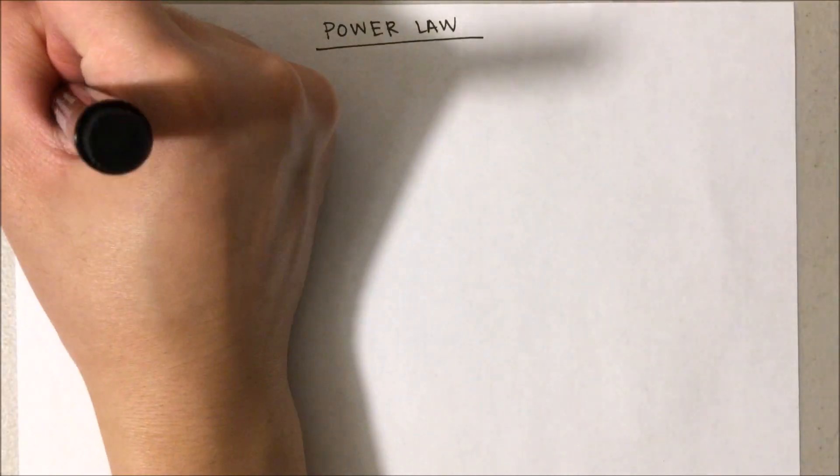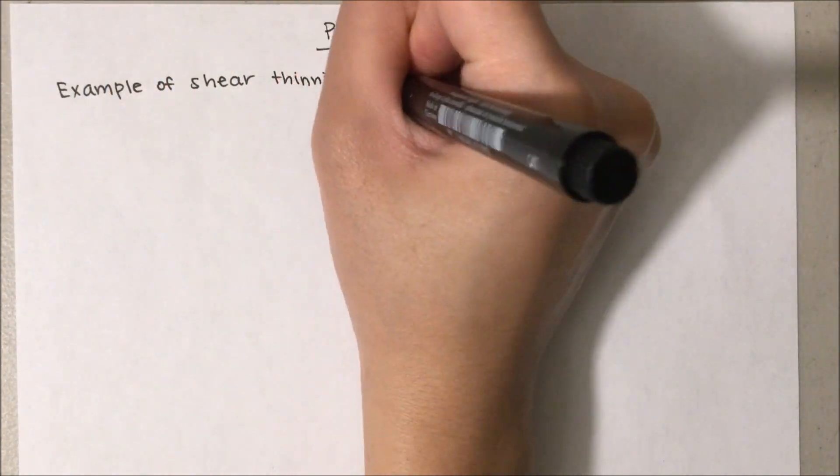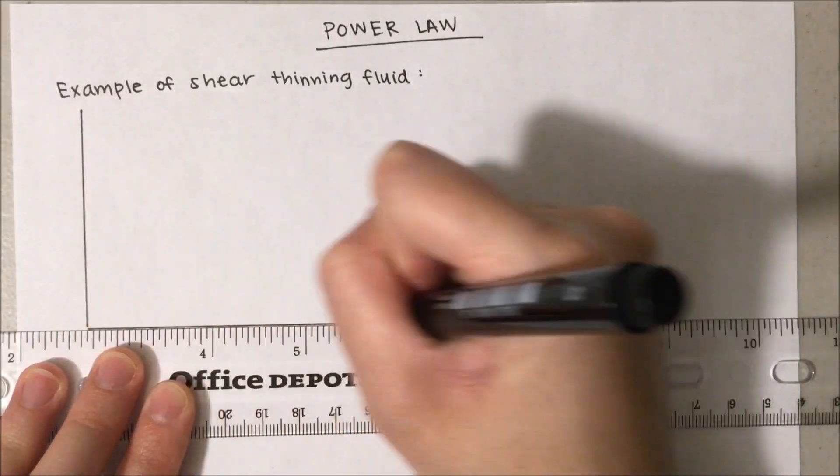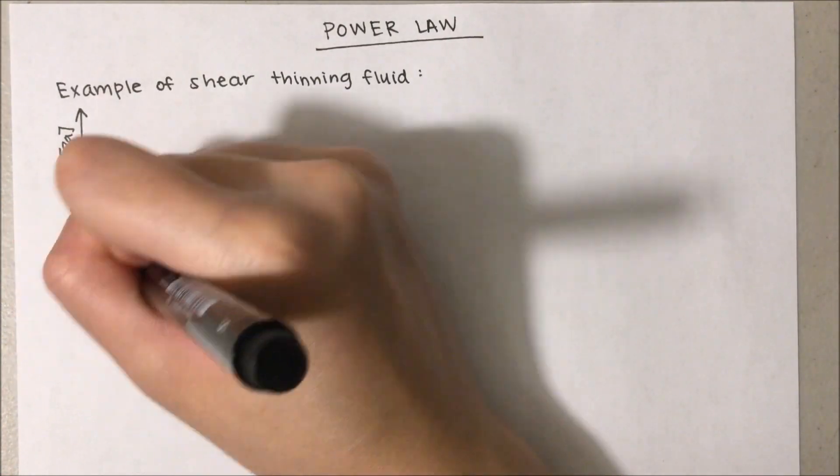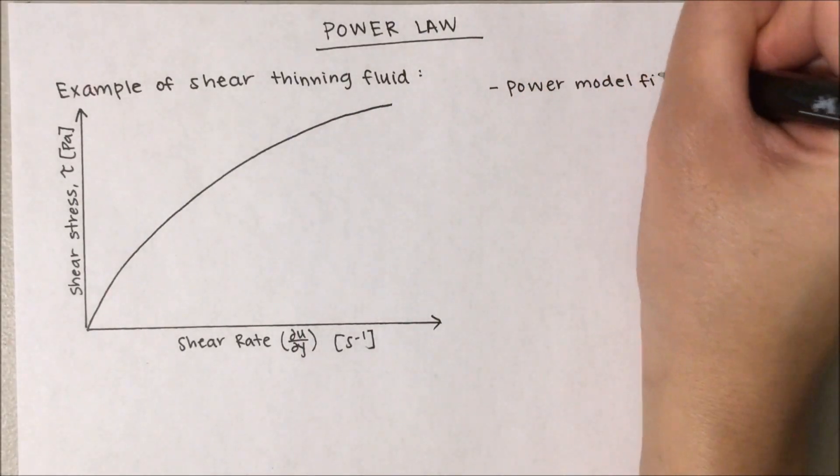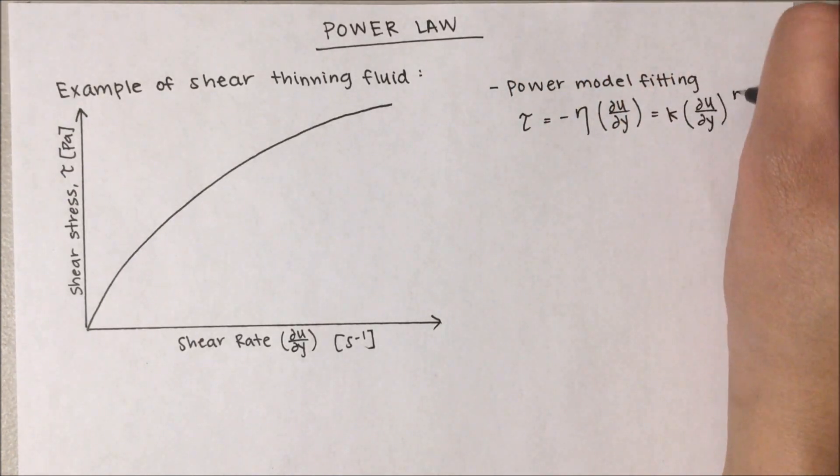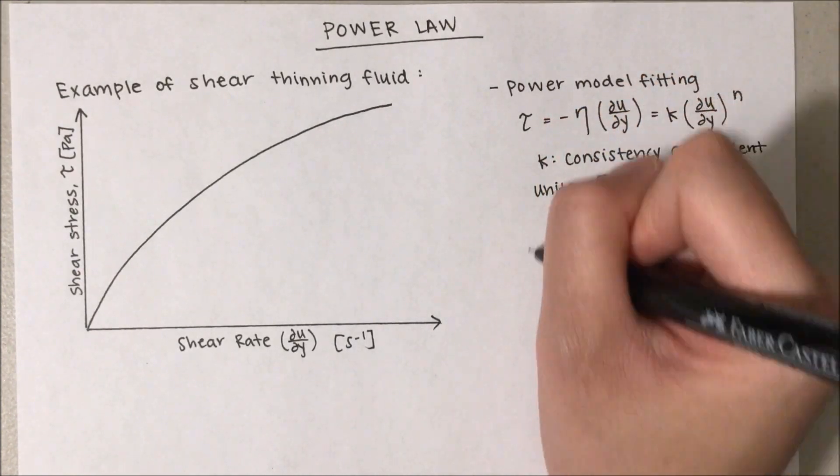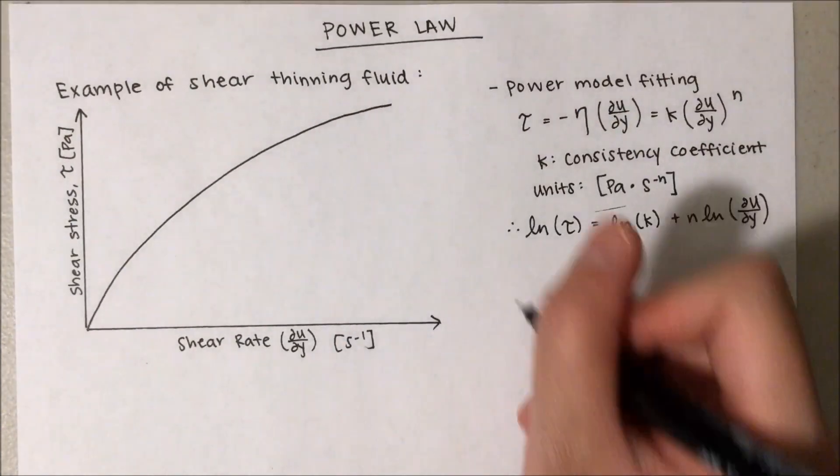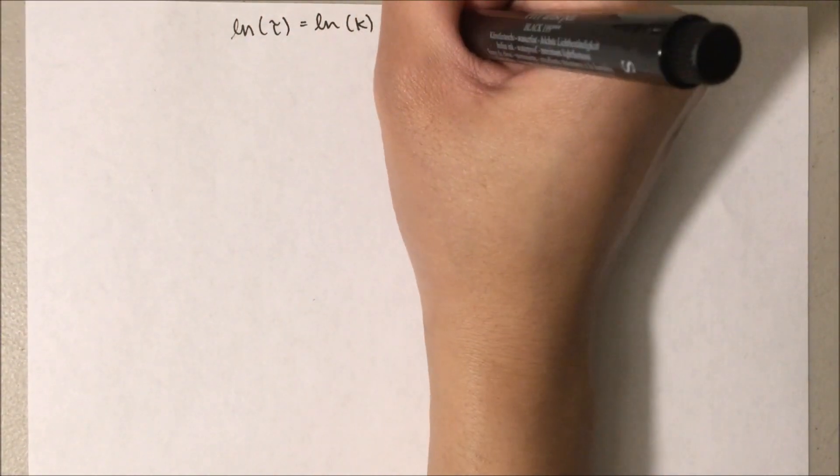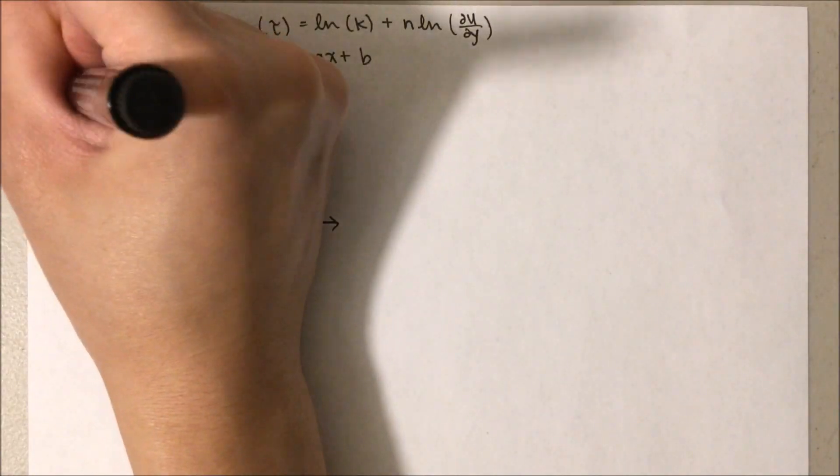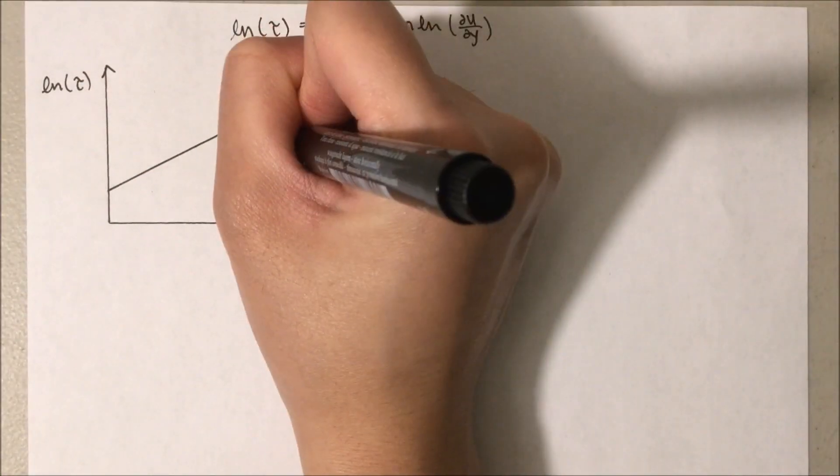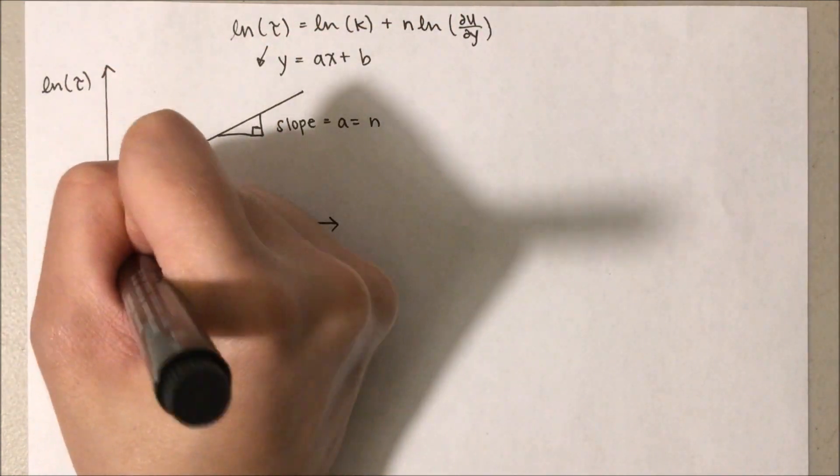We could calculate the non-Newtonian fluid's shear stress and apparent viscosity by utilizing the power law. Here is an example curve for a shear thinning fluid. As you might notice, the shear rate is on the x-axis instead of shear stress now, because shear rate is normally the one to be measured. By combining the equations of shear stress and apparent viscosity, we could have a character value k, which is the consistency coefficient. k is similar to apparent viscosity, but they do have different units. By applying the log function to all the terms, we could get a linear function. Similar to y equal to ax plus b, where log k is the y-intercept and the n is the slope.